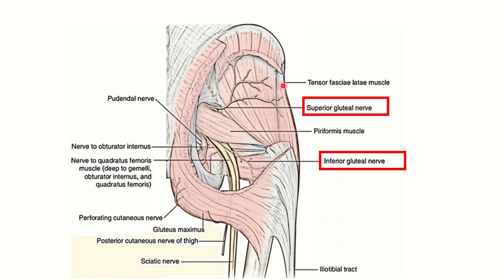In this picture, it is more clear. We can see the cut section of gluteus maximus, then gluteus medius and gluteus minimus. This is the superior gluteal nerve, going upward and supplying two muscles: gluteus medius and gluteus minimus. We know that gluteus medius and gluteus minimus cause abduction of the hip or abduction of the thigh.